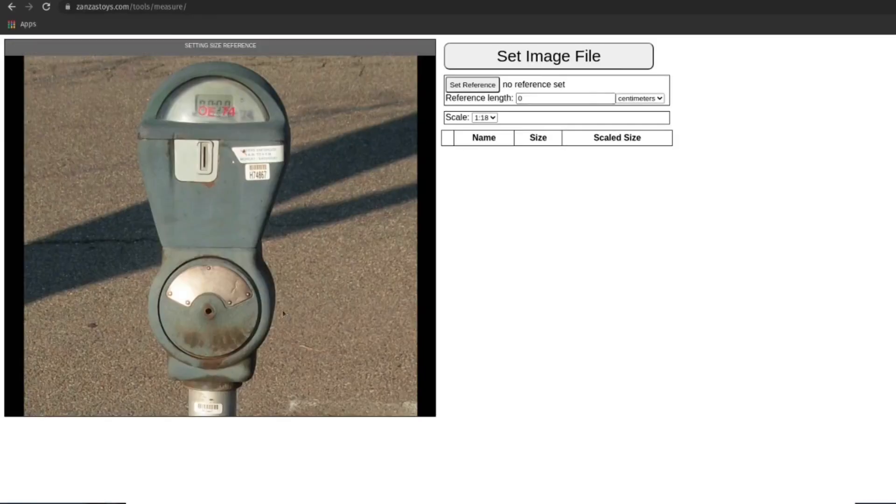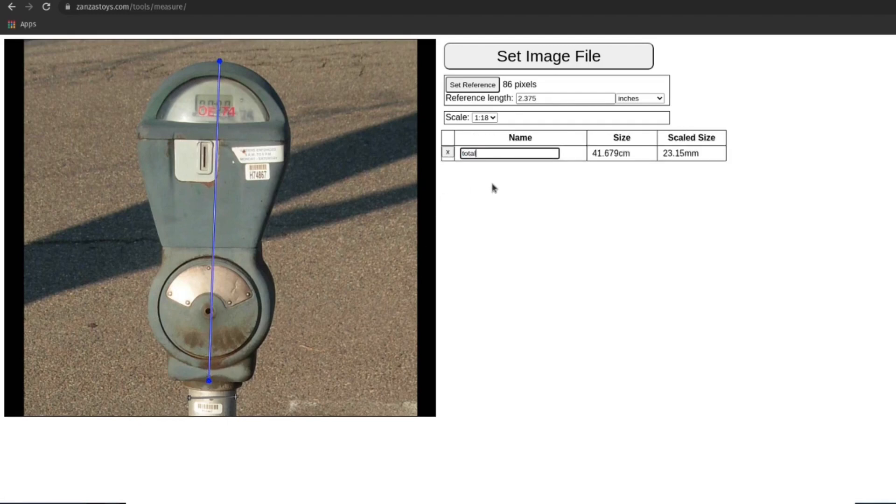So, this was fairly straightforward to do in FreeCAD. I just started with getting a reference image, as always. I found a good photo of a parking meter pretty easily. But what was a little difficult was getting a good reference dimension. So, what I ended up going with was I managed to Google around a little bit and found that the pipe that parking meters get mounted on is 2-inch pipe,